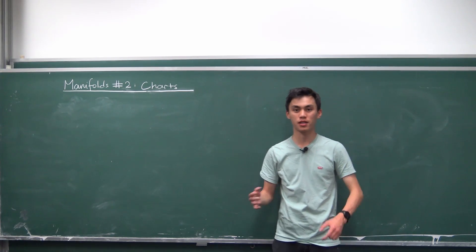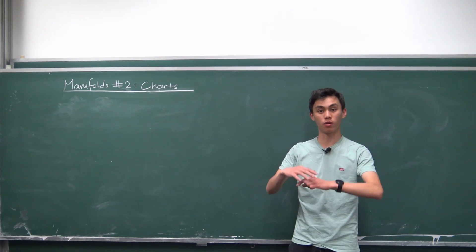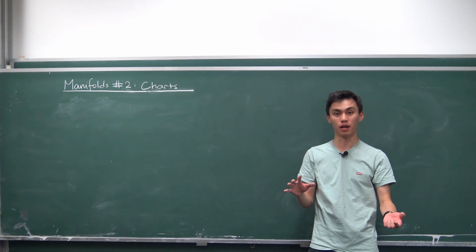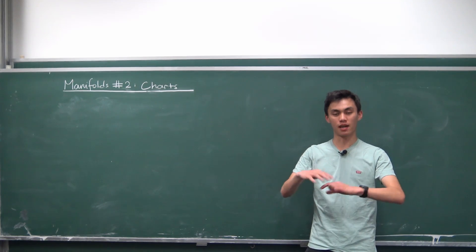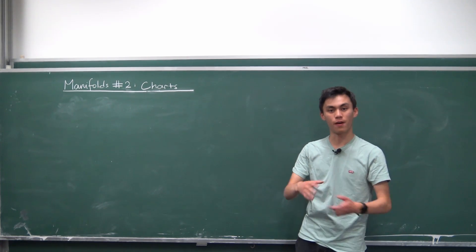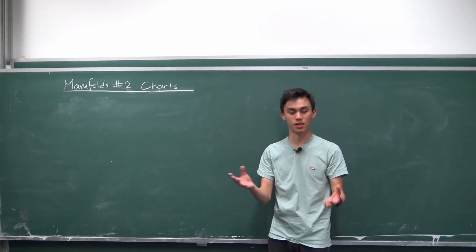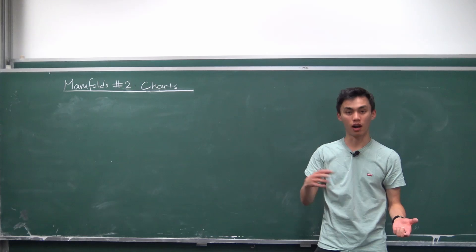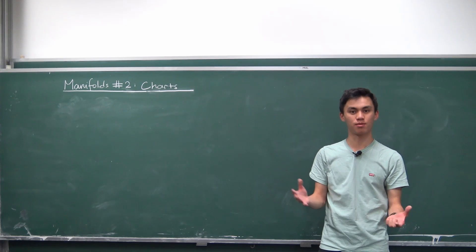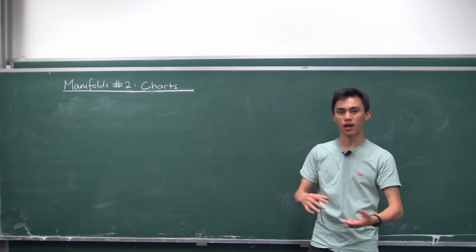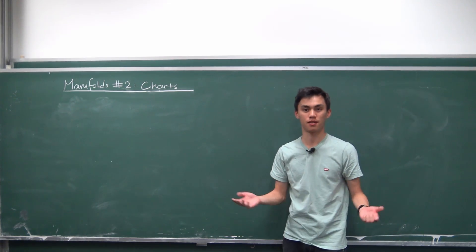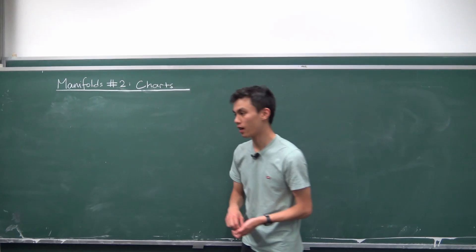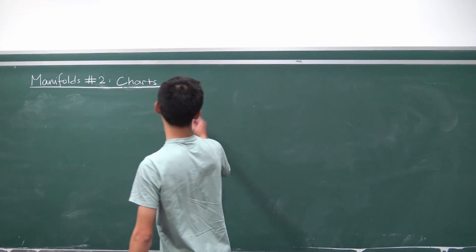Well, it's just a way to give coordinates to small regions in our topological manifolds. Because our manifold is a very abstract space still, we would wish to describe it in a bit more concrete way using a list of numbers. So let's take a look at an example.